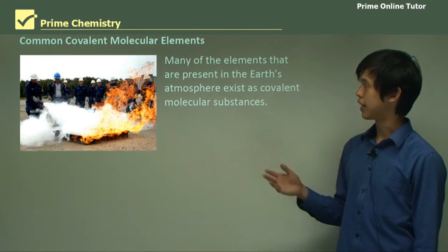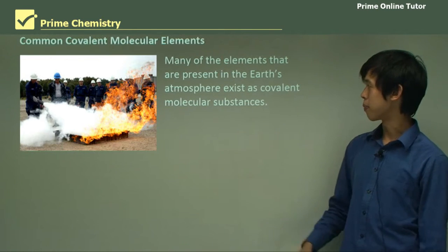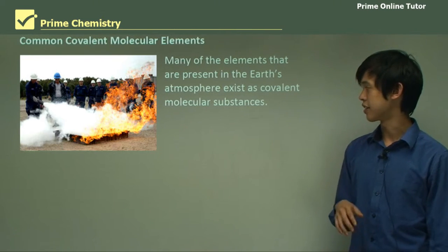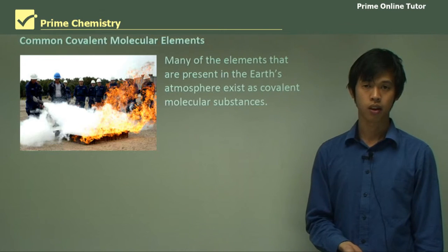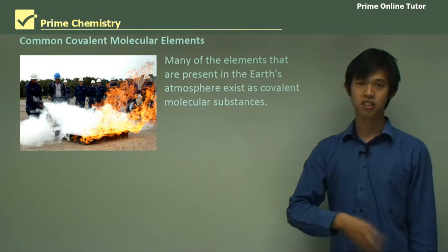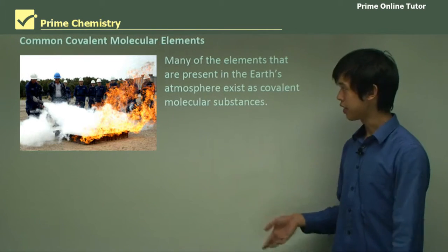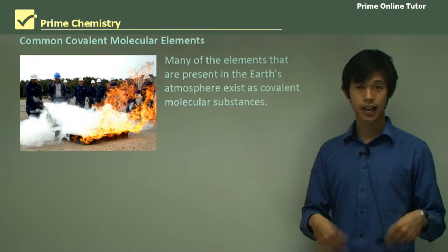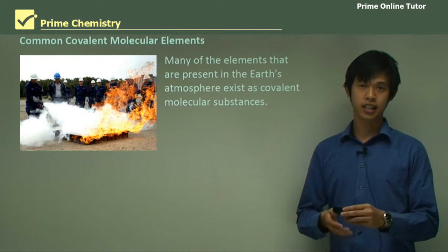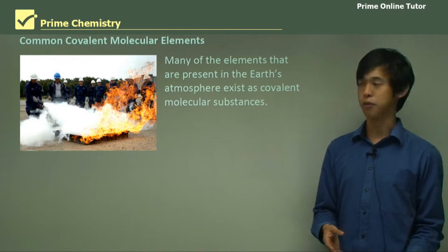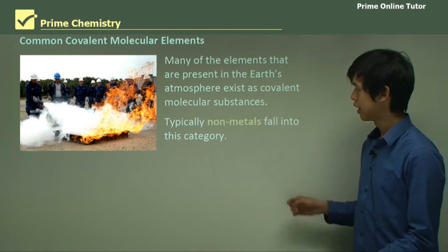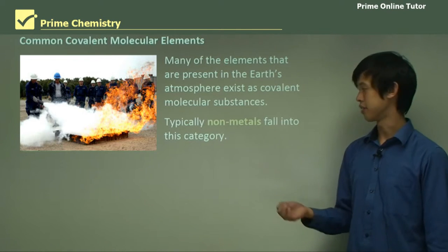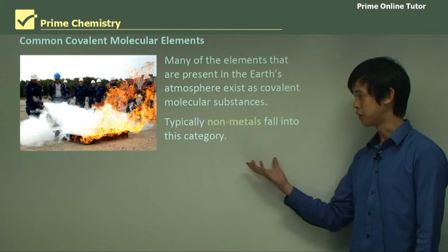So common covalent molecular elements. Many of the elements that are present in the earth's atmosphere exist as covalent molecular substances. So nitrogen, oxygen, fluorine, chlorine, they all exist as molecules in the atmosphere, but that is their elemental state. Now typically, these are nonmetals, obviously, because they're gases fall into this category.